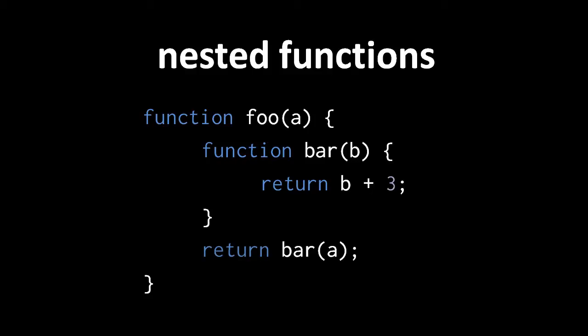First, a function statement inside another function assigns the newly created function not to a global variable, but instead to a local variable of the enclosing function. So here, inside the function foo, a new function is created and assigned to the local variable bar of the function foo.